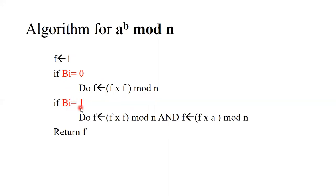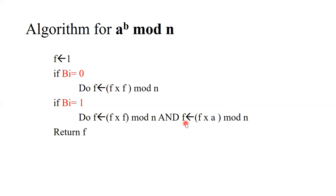And if b of i is equal to one, then you need to do two steps. One will be the same step as when b of i equals zero: we calculate f into f mod n and store it in f. But there will be another step — we also need to multiply f with the base of this function, and after multiplication and taking mod n we store it in f and return it. We continue these steps until all binary digits have been processed.